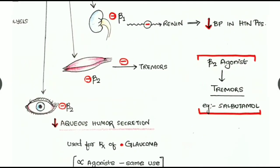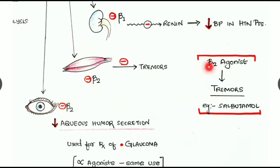Beta blockers also inhibit beta-1 receptors in the renal system, inhibiting renin secretion and causing reduced blood pressure in hypertensive patients. Blockage of beta-2 receptors in skeletal muscles inhibits tremors. To recall, beta-2 agonists cause tremors — for example, salbutamol.